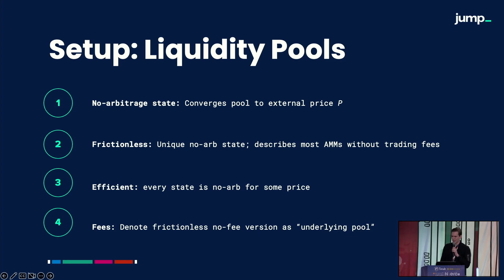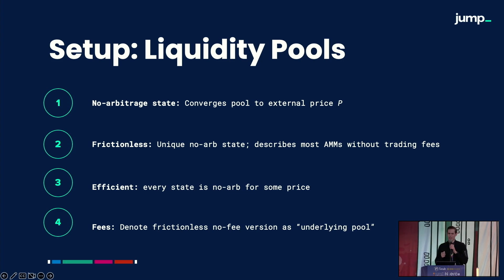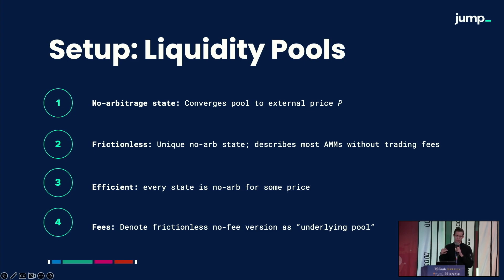We have three steps of setup to go through, then we can present our results. Step one: liquidity pools. We can define a no-arbitrage state as a situation where the pool converges to some external price P. At that point, any divergence from that state will lose money. Frictionless, there is a unique no-arbitrage state for any given reference price — this describes most Uniswap-style AMMs without trading fees. We also have a notion of efficiency, where every state is no-arbitrage for some price. We will consider pools with fees, but always with reference to a frictionless no-fee version as the underlying pool.